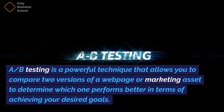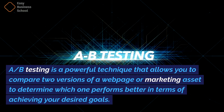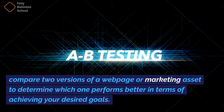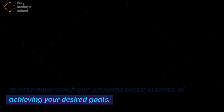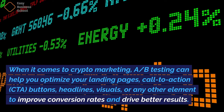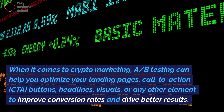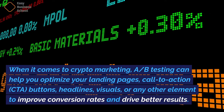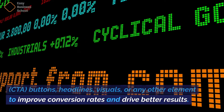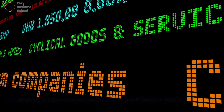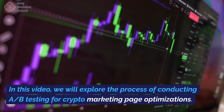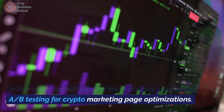A/B testing is a powerful technique that allows you to compare two versions of a webpage or marketing asset to determine which one performs better in terms of achieving your desired goals. When it comes to crypto marketing, A/B testing can help you optimize your landing pages, call-to-action buttons, headlines, visuals, or any other element to improve conversion rates and drive better results. In this video, we will explore the process of conducting A/B testing for crypto marketing page optimizations.